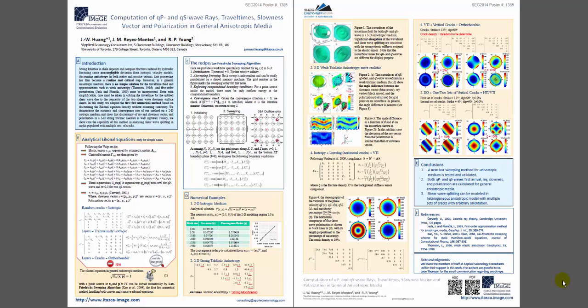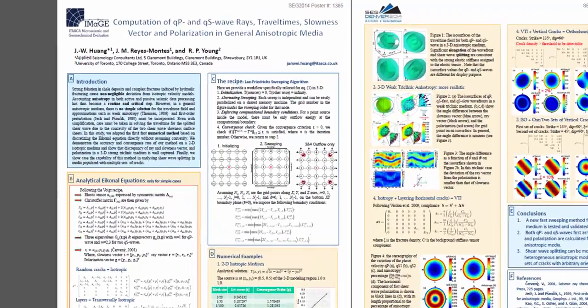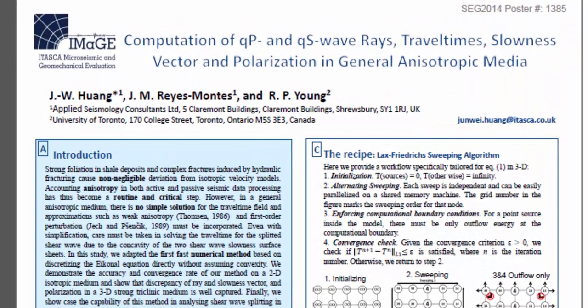Hello everyone. Thanks for watching this video. This is a poster presentation that I presented at the SCG Denver 2014. The title of this presentation is Computation of Quasi-P and Quasi-shear wave rays, travel time, slowness vector, and polarization in general anisotropic media.